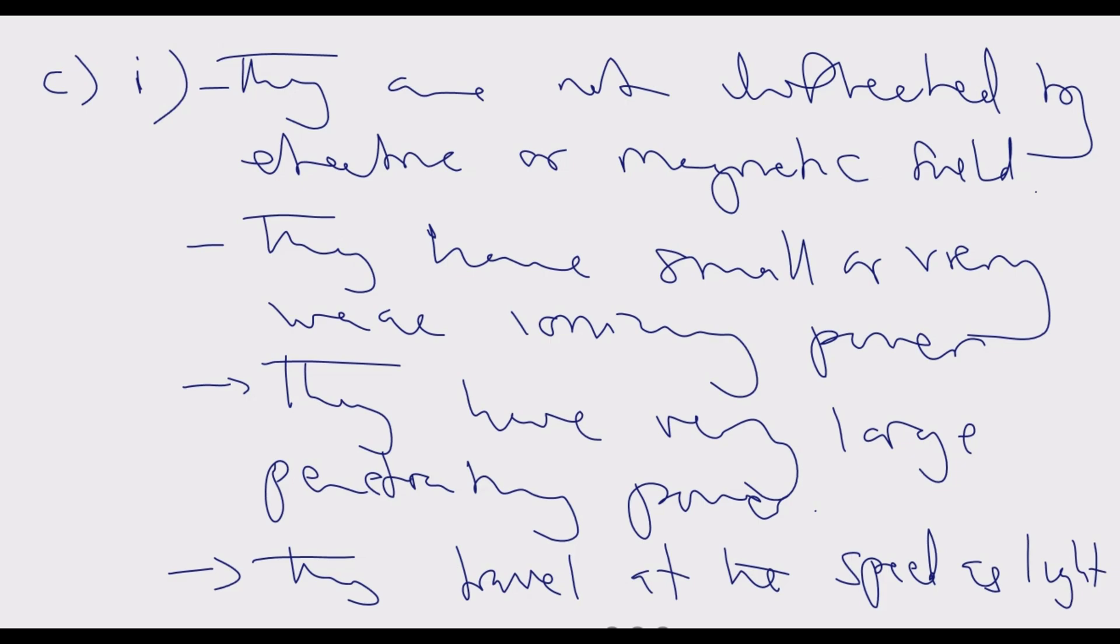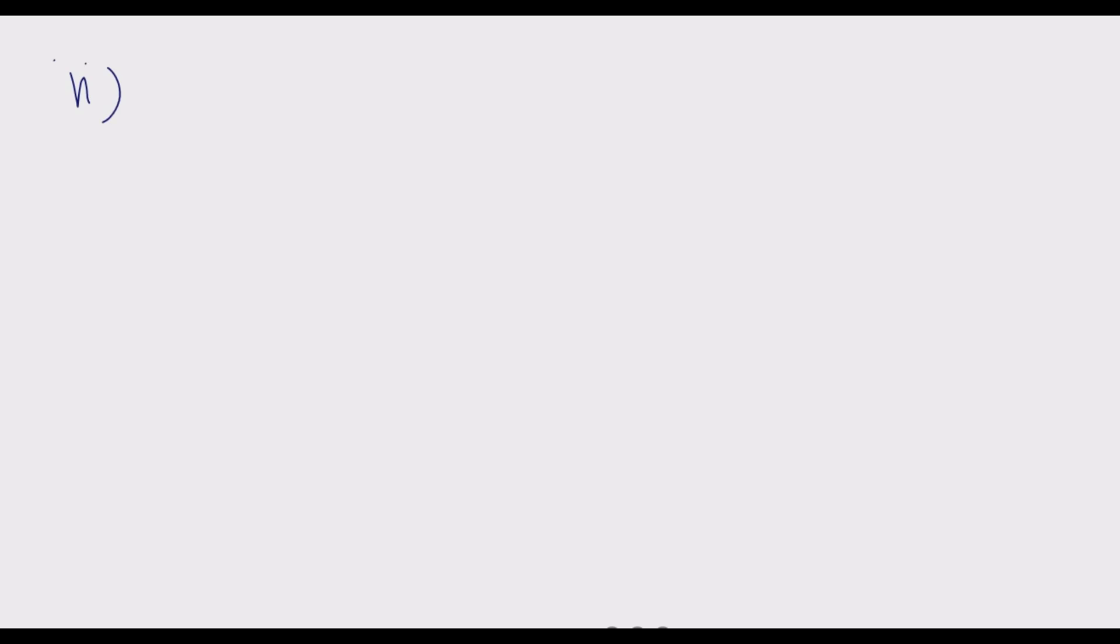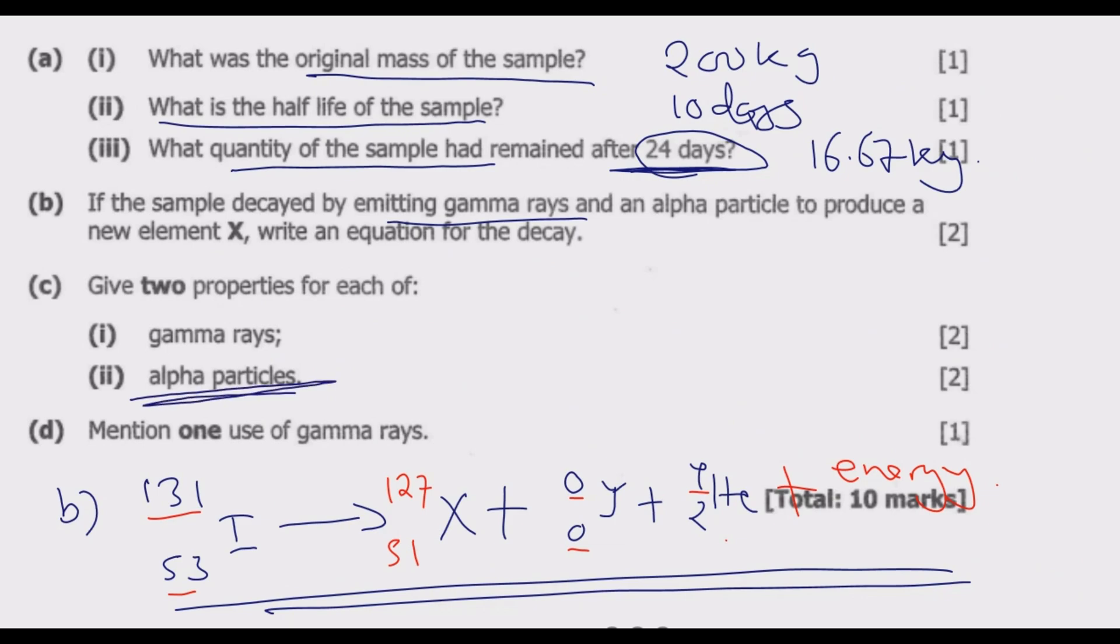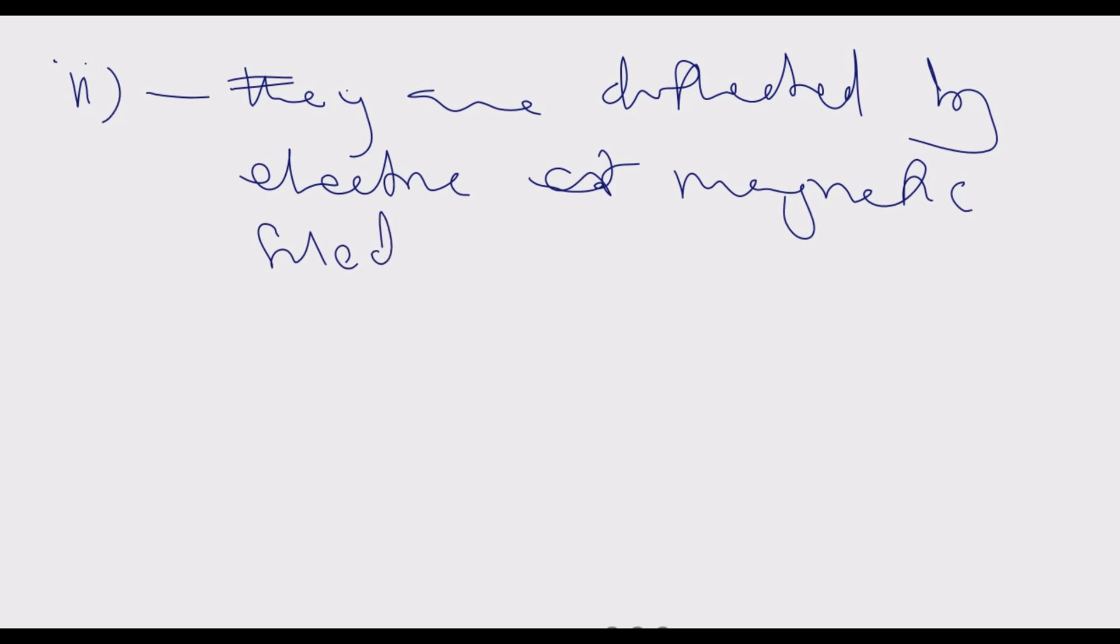Roman numeral 2, the properties of alpha particles. One, they are deflected by electric or magnetic fields because they have a charge, as opposed to gamma rays. Number two, they have the strongest ionizing power.